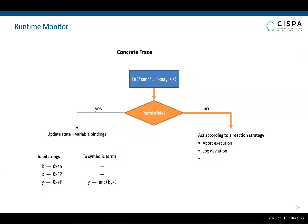If a concrete event is not permissible — for example, the implementation discloses the key k — the monitor reacts according to a reaction strategy. For instance, it can abort the execution or log that a deviation has occurred.